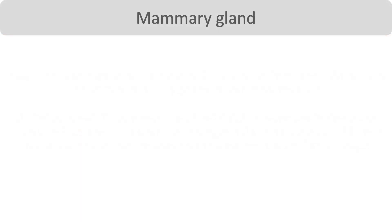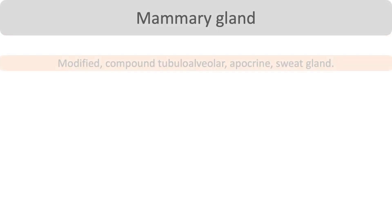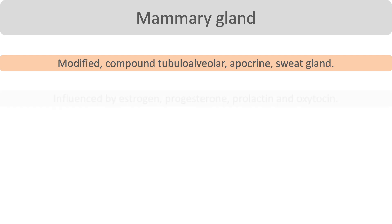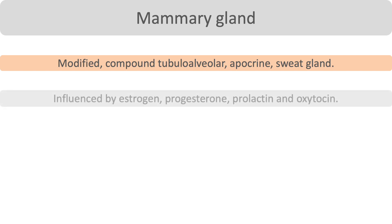Mammary gland is a modified compound tubulo-alveolar apocrine sweat gland. It is influenced by various hormones. Estrogen and progesterone help in differentiation and development of ducts and alveoli. Prolactin helps in milk secretion, and oxytocin helps in milk expression.